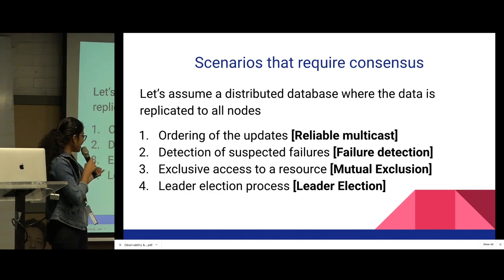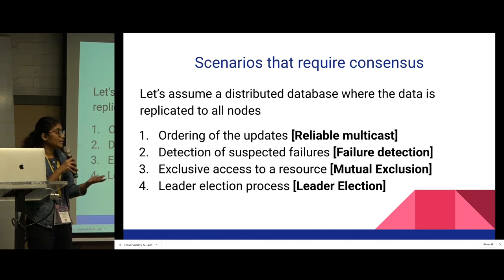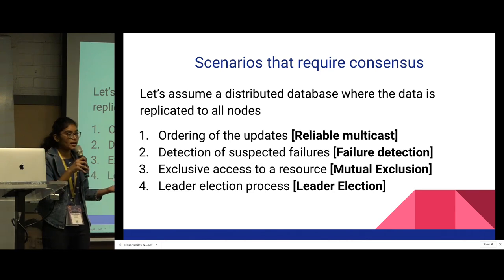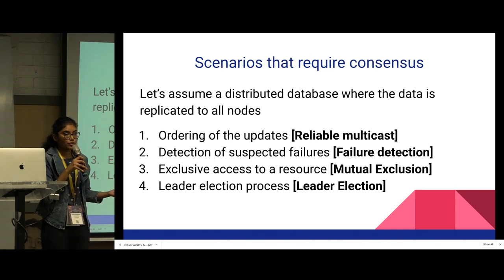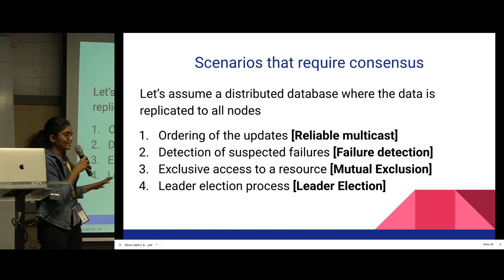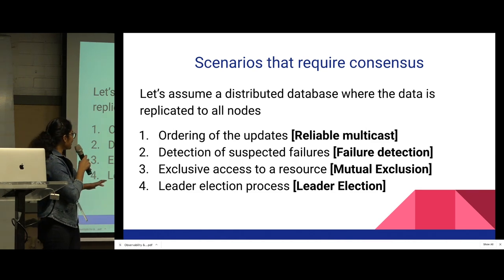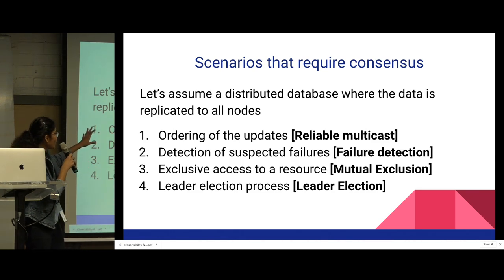And of course, mutual exclusion — for example, if multiple components are trying to access the same resource at the same time, exclusive access to a resource should be possible. And leader election, which we are very well aware of — if we want to redirect all writes to a particular leader, a leader election process has to take place. These are common scenarios we encounter in a distributed system, and they are all directly related to consensus because we need consensus to solve all these problems.